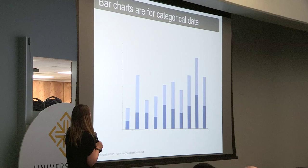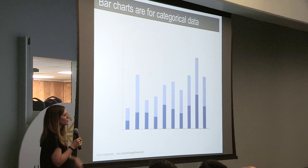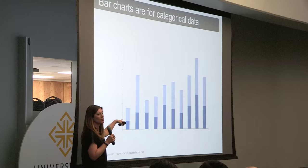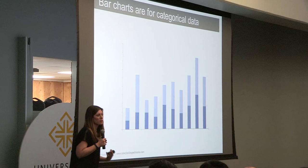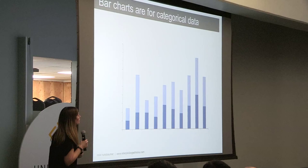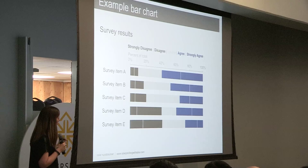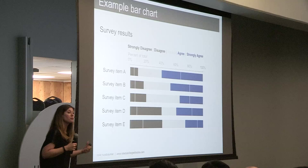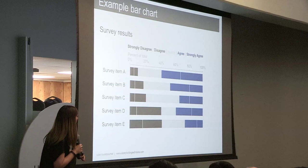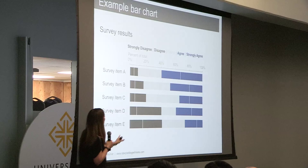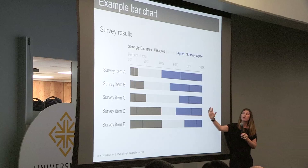Another type is the stacked bar chart. A great use case is if you want to compare totals across different categories and within a given category you want some understanding of the subcomponent pieces. Less useful if you want to compare those subcomponent pieces across categories, since past the first series you no longer have a consistent baseline. An exception is when you use 100% stacked bars — you get a consistent baseline both along the bottom and along the top. This can be really useful for showing survey data, for example on a Likert scale ranging from strongly disagree to strongly agree.